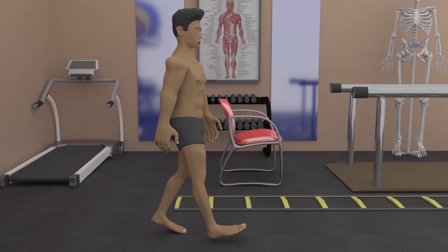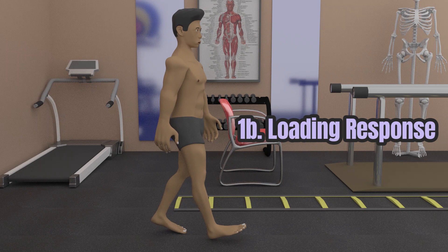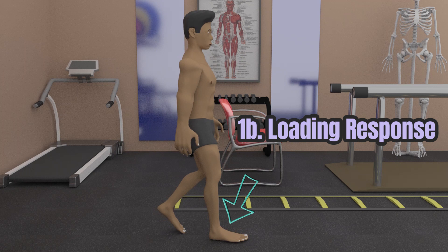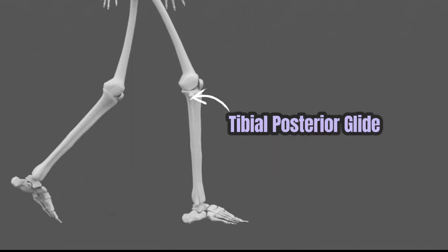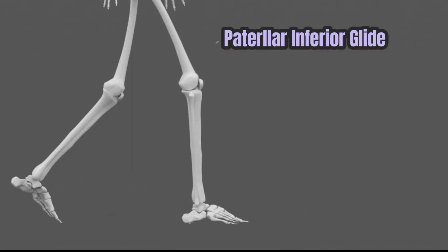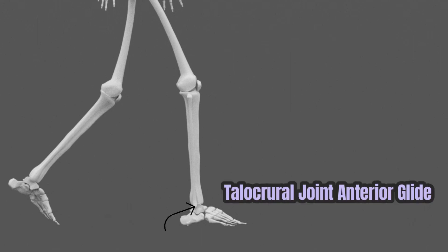After the initial contact, we proceed to the loading response, also known as foot flat, which starts when the whole foot contacts the ground and ends when the opposite foot comes off the ground. Here, there is still a femoral head posterior glide for hip flexion. There is also a tibial posterior glide and patellar inferior glide for knee flexion. At the ankle, there is a talocrural joint anterior glide for ankle plantar flexion.